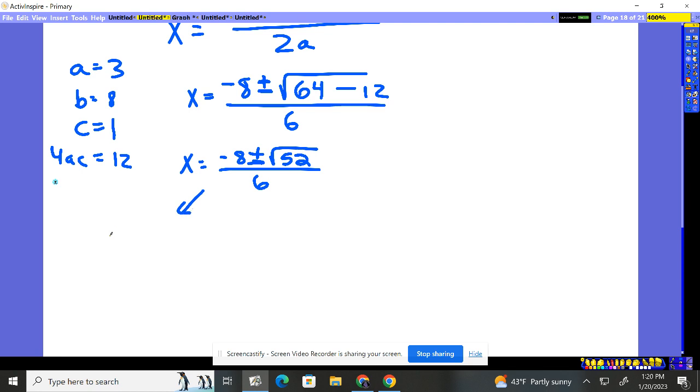So I'm going to do the addition part here. Negative 8 plus the square root of 52, I'll divide it by 6, and I'll do the subtraction part over here. x equals negative 8 minus the square root of 52 over 6.